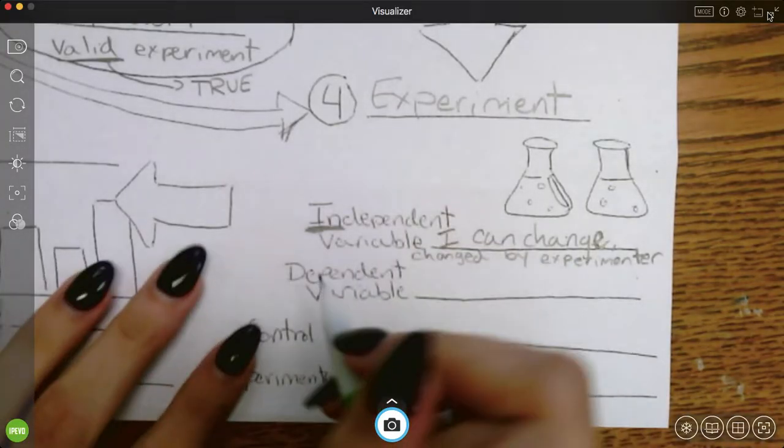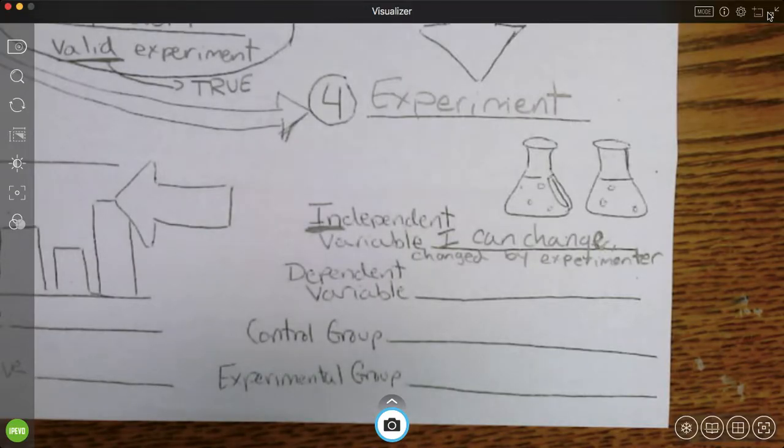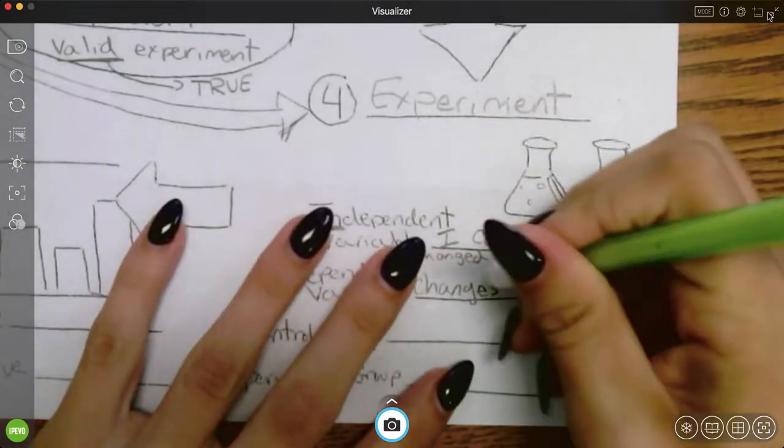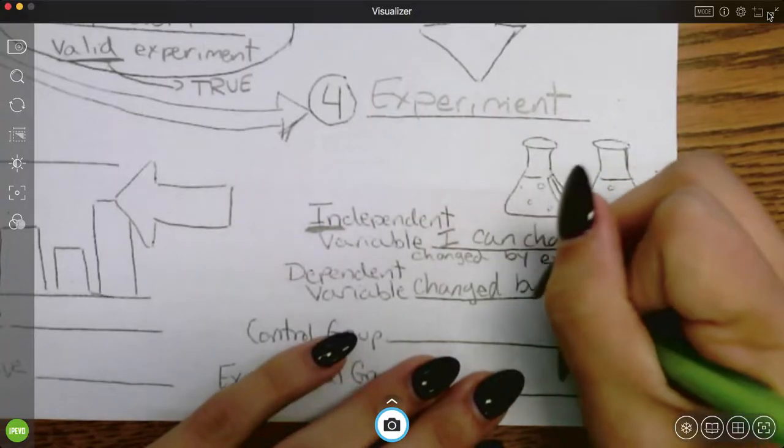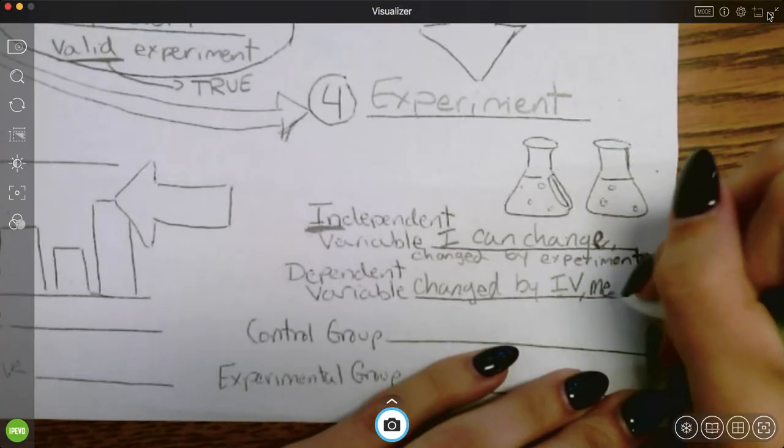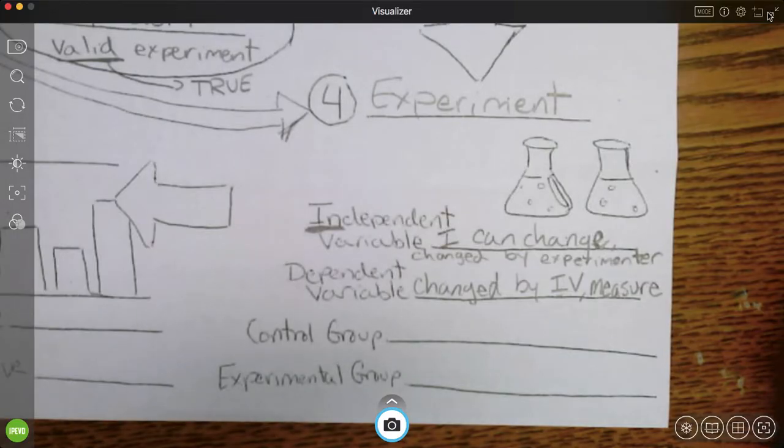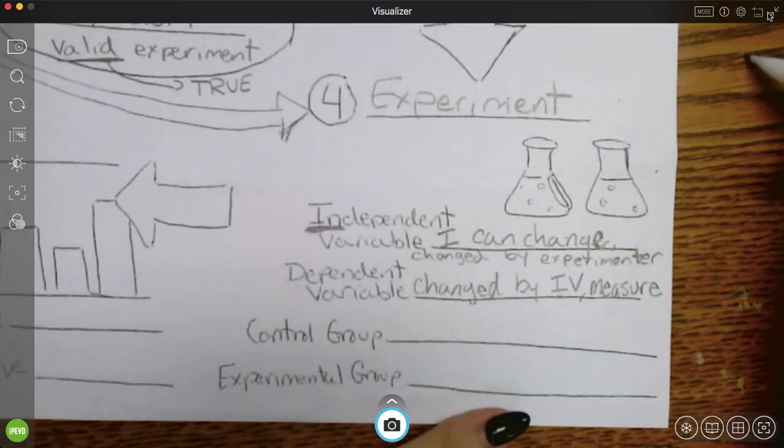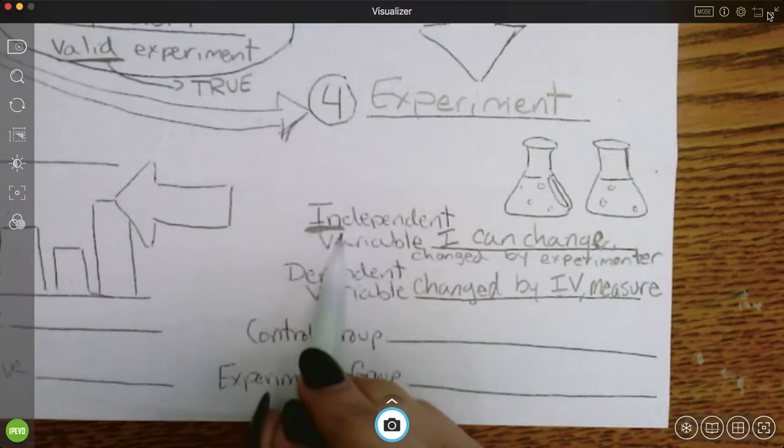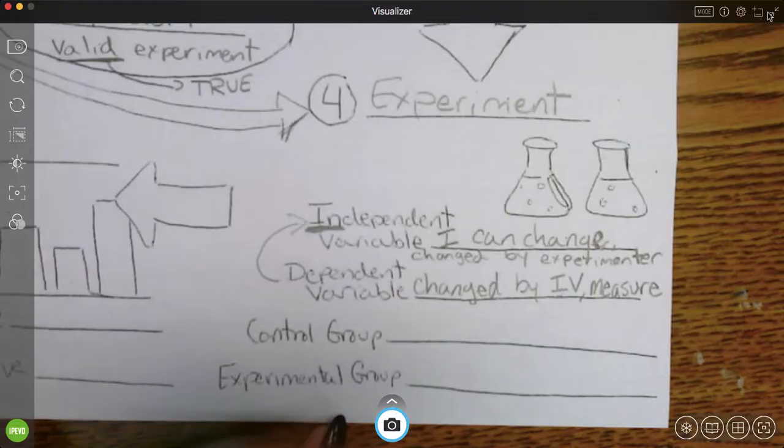The dependent variable. When you're dependent, you rely or need someone else. The dependent variable changes or is changed by the independent variable. I'm going to abbreviate that IV. You measure the dependent variable. So if I tell my friends, you go listen to music while you study. You go study in silence. What I measure after, what I think the music is going to change is how well they do on a test. So my independent variable, I changed it. The dependent variable depends on this. I'm going to measure it later.